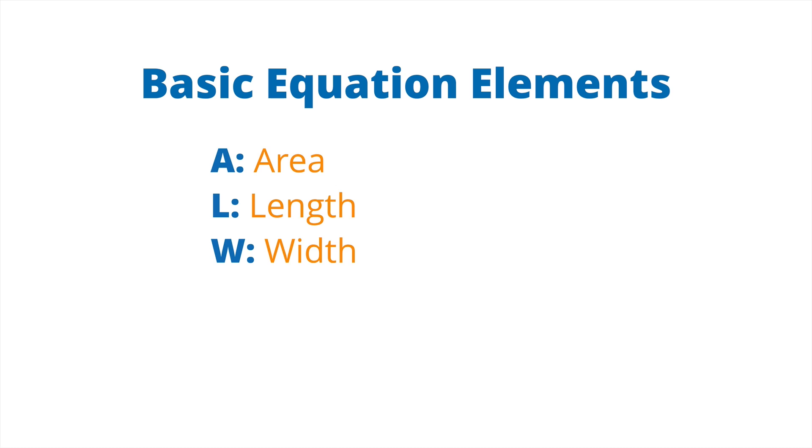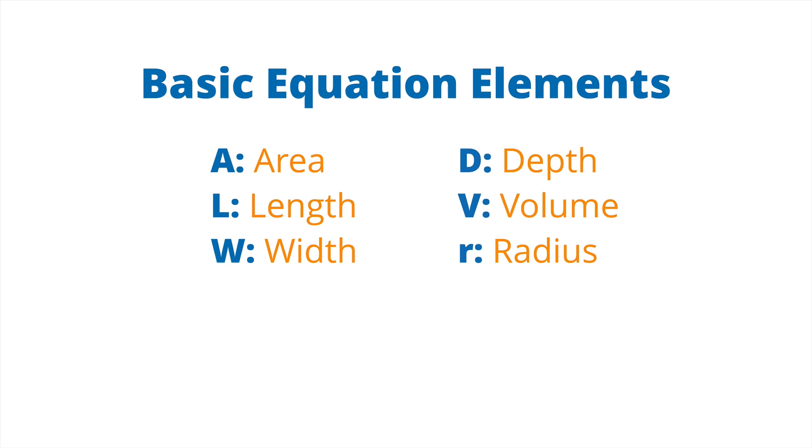Before we start measuring your pool, let's go over a few things we'll use to calculate your pool's volume. The first is the basic equation elements. We have the area (A), the length (L), and the width (W). These are all represented by single letters. Then you have your depth (D), the volume (V), the radius (r). And then finally, we have pi at 3.14, which is a constant. And I'm not going to get past two decimal places because I'm not a mathematician.